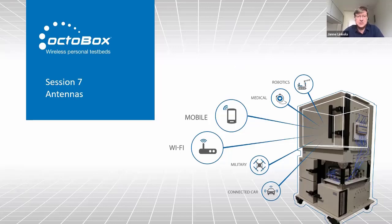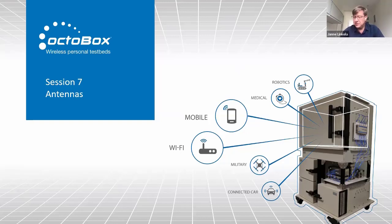Welcome everybody. This is the seventh session of the Octoscope tutorial series. This time we're going to talk about antennas — what are they, what do they do, and what are some of the details such as gain, polarization, near field, far field, etc. We're really glad that you could join us this morning, or whatever the time is in your part of the world.